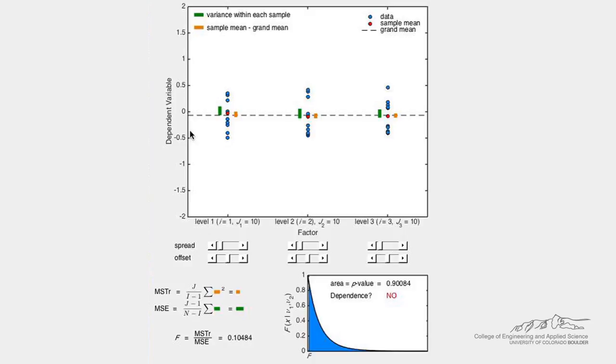This demo shows how a balanced one-way analysis of variance works, also known as ANOVA. Let's consider three experiments, each with ten measurements shown as the blue circles here. Capital I is the number of experiments, so three.